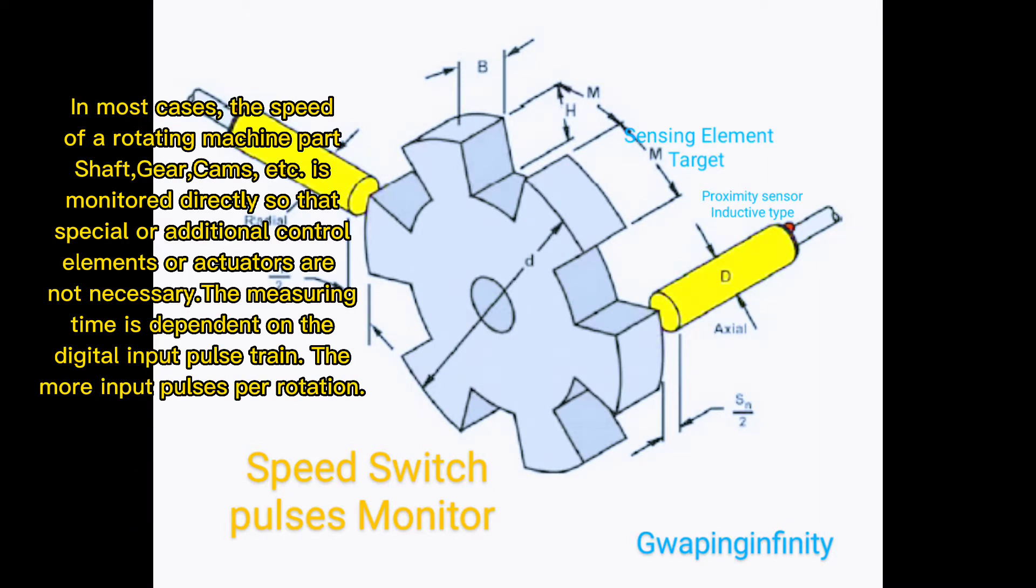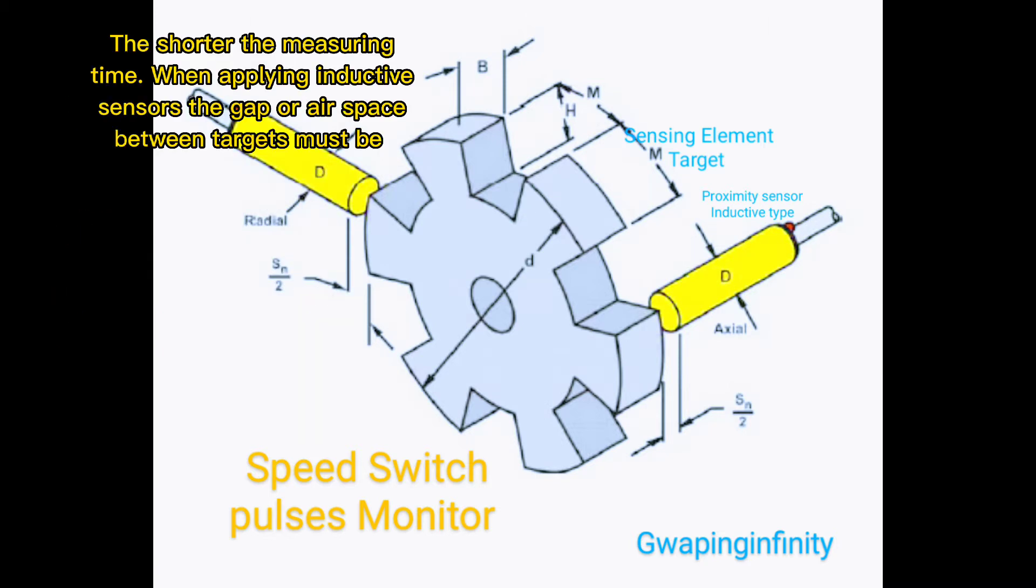In most cases, the speed of a rotating machine part, shaft, gear, cams, etc., is monitored directly so that special or additional control elements or actuators are not necessary. The measuring time is dependent on the digital input pulse train, the more input pulses per rotation. The shorter the measuring time, when applying inductive sensors the gap or airspace between targets must be.